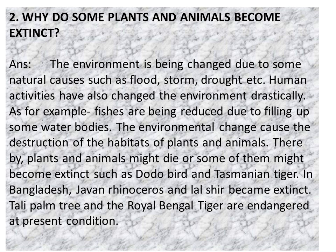Why do some plants and animals become extinct? Answer: The environment is being changed due to some natural causes such as flood, storm, and drought. Human activities have also changed the environment drastically. For example, fishes are being reduced due to the filling up of some water bodies. The environmental change caused the destruction of the habitats of plants and animals. Thereby, plants and animals might die or some of them might become extinct, such as the dodo bird and Tasmanian tiger.